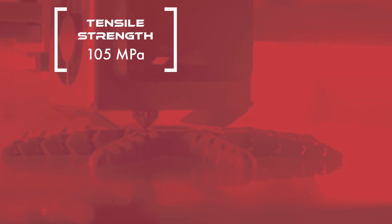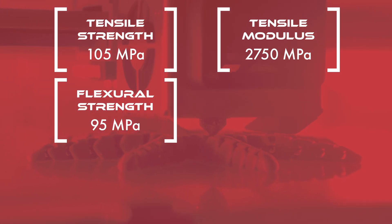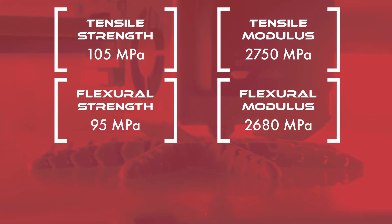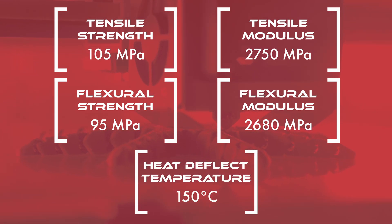Moving on to typical properties of PEKK filaments. PEKK has a tensile strength of 105 megapascals, a tensile modulus of 2750 megapascals, a tensile elongation of five percent, a flexural strength of 95 megapascals, and a flexural modulus of 2680 megapascals. For thermal properties, PEKK has a heat deflection temperature of 150°C with an overall melt temperature of 305°C, and the resin we use does have a UL94 V0 rating down to 0.8 millimeters.